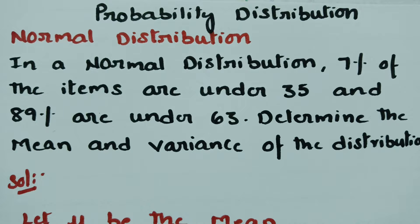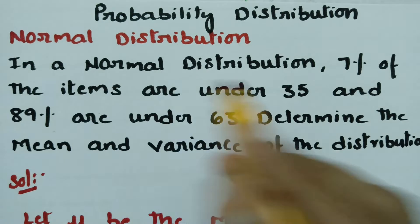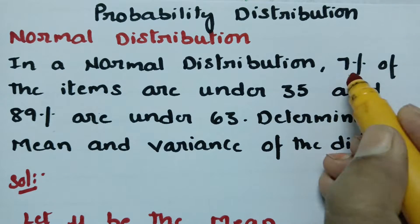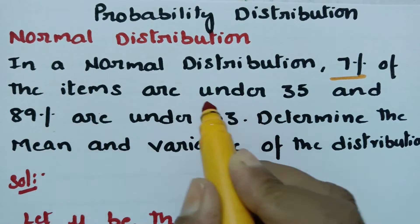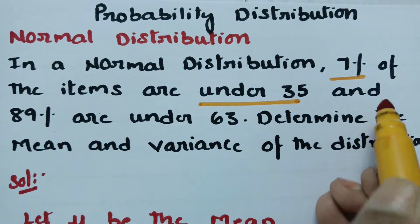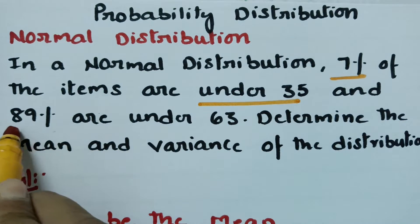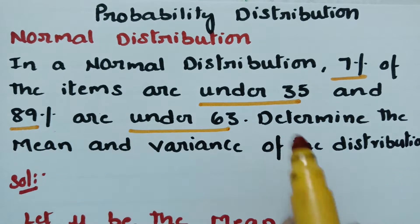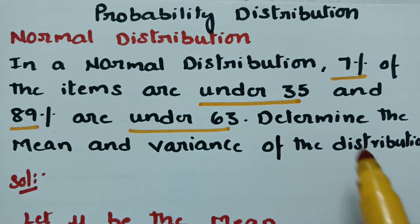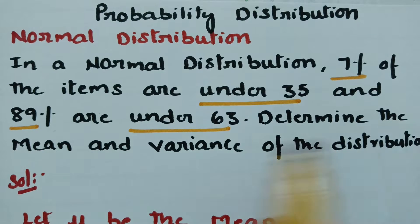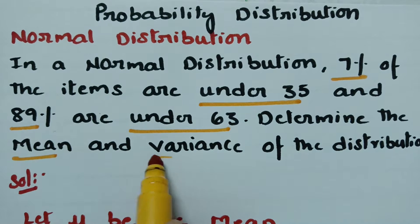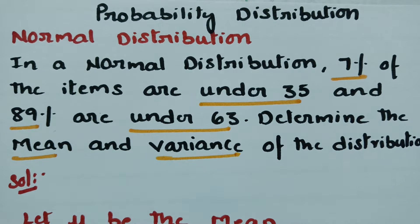This video is on normal distribution. In today's video, we are going to solve the most important problem. In a normal distribution, 7% of the items are under 35 and 89% are under 63. We need to determine the mean and the variance of the distribution.